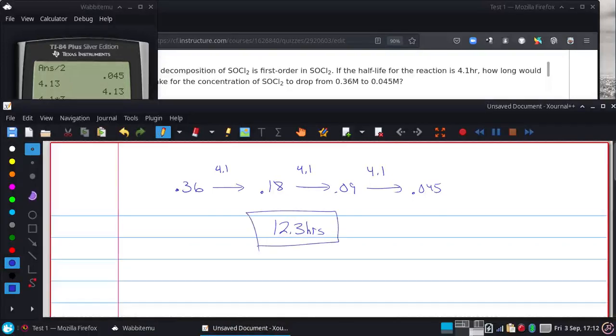And that one's going to be pretty much dead on because it's exactly the 0.045. Now, if I wanted to calculate this exactly, like for instance, let's say it wasn't 0.045, it was something else. We do know it's first order because it said so, and our first order equation looks something like this.